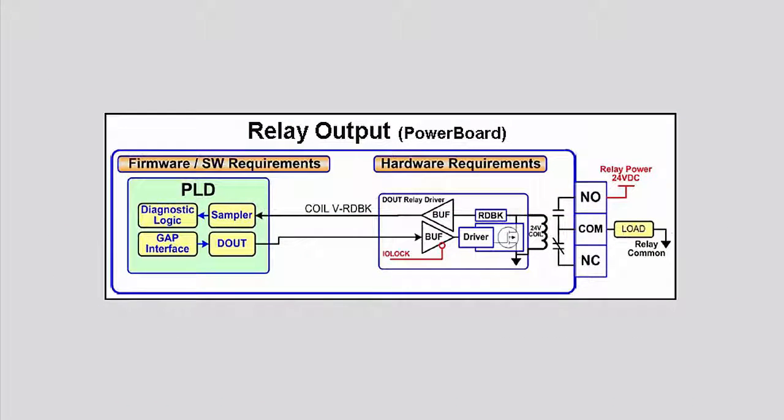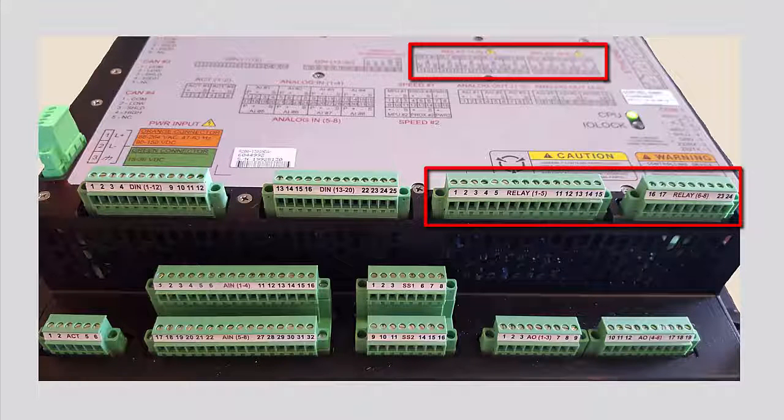Discrete or relay outputs on the controller are isolated and use form C relay outputs with normally open, normally closed, and common contacts. Each individual relay is separated into a numbered block containing the contact labels and corresponding terminal block numbers.